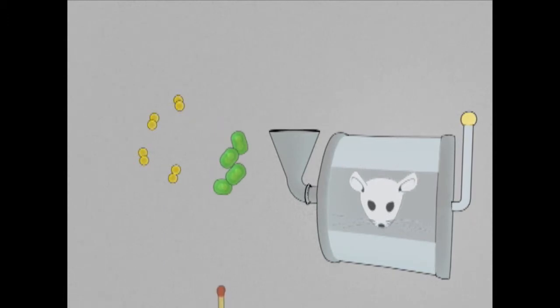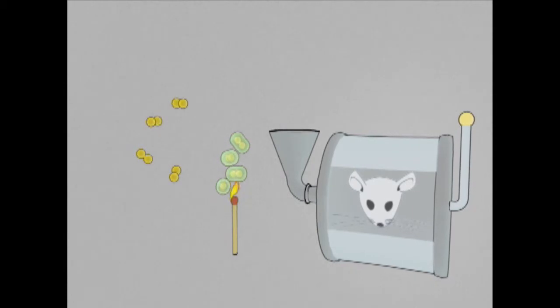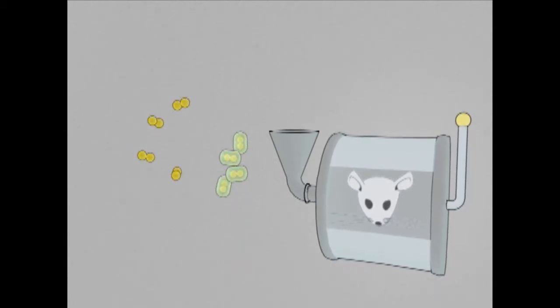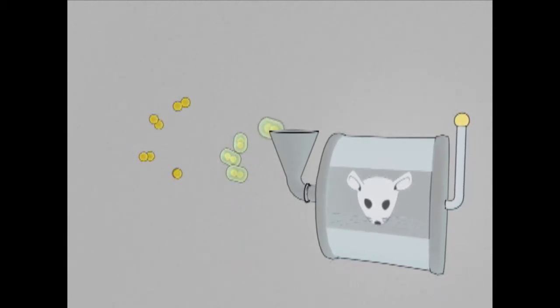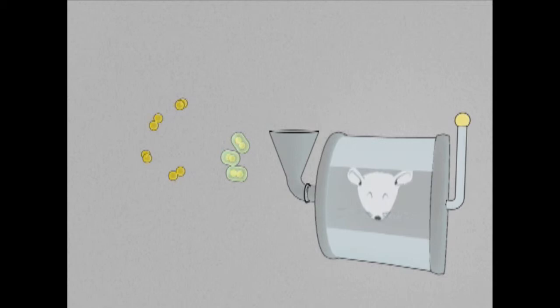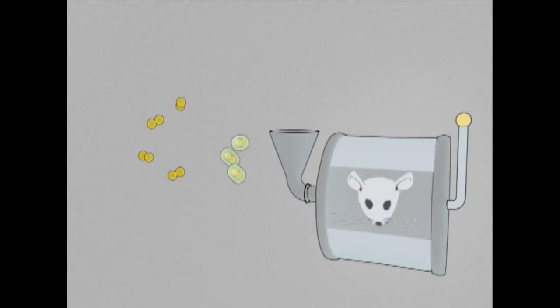He thought perhaps that it was the slimy shell that made the smooth cells deadly. To find out, he killed a group of smooth cells with heat and injected them with slimy coating intact into the mouse. The mouse lived, which meant that the smooth coating was not in itself enough to cause death.